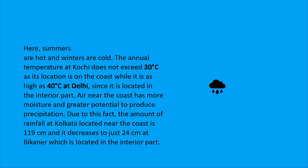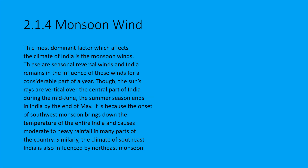Coastal areas receive heavy precipitation. For example, Kolkata receives about 119 cm of rainfall, while Bikaner in Rajasthan, which is an interior area, receives only about 20 cm of rainfall — very little compared to coastal regions.